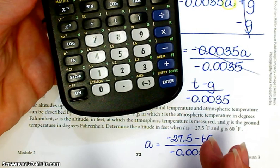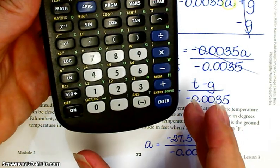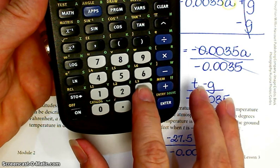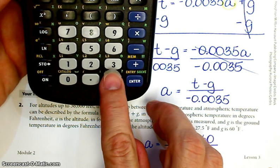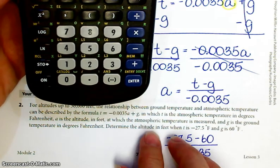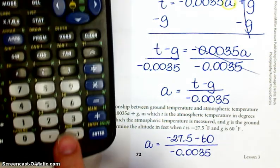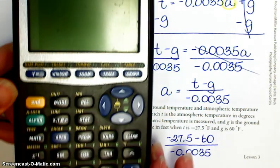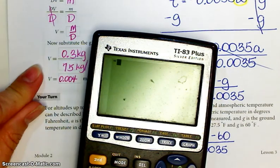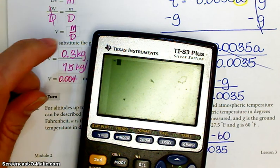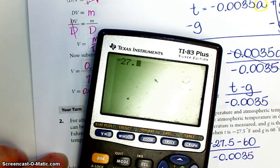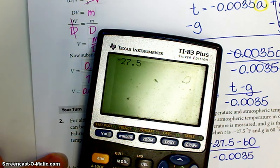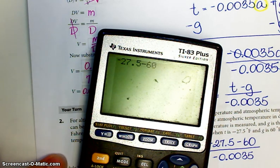There's actually a plus minus button. So I can use this little minus sign. That is not a subtraction sign. That's a negative sign. So I'm going to say negative. So I hit that little button. Negative. There it goes. Negative 27.5 minus 60.